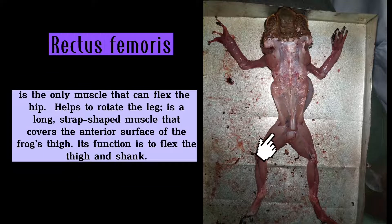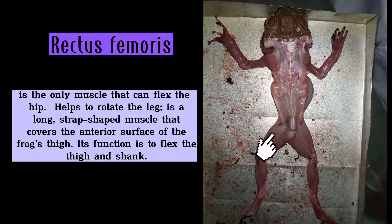The rectus femoris is the only muscle that can flex the hip. It helps to retract the leg. It is a long, strap-shaped muscle that covers the entire surface of the frog's thigh. Its function is to flex the thigh and shank.